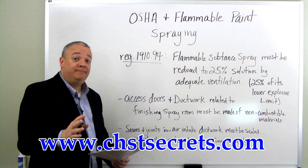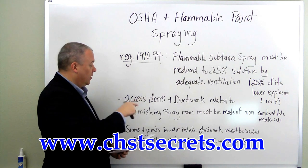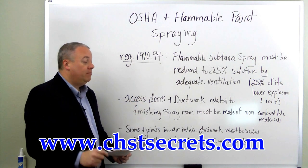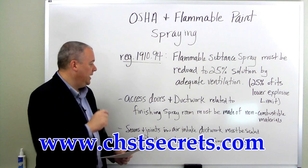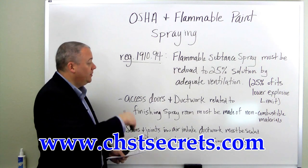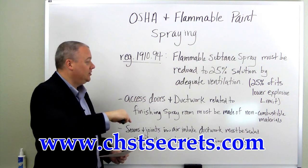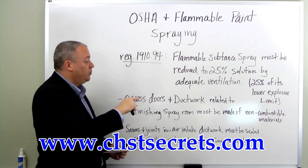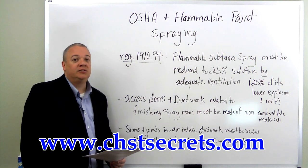Along with that, OSHA also states that access doors and ductwork related to the finishing spray room must be made of non-combustible materials. The access doors going into the spray room and the ductwork that's bringing fresh air in from the outside related to the finishing spray room must be made of non-combustible materials.